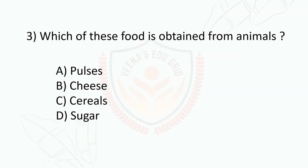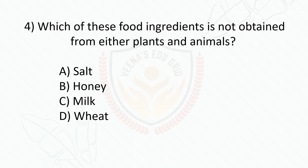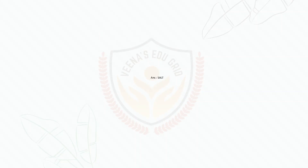Which of these foods is obtained from animals: pulses, cheese, cereals, or sugar? The answer is cheese. Which of these food ingredients is not obtained from either plants or animals: salt, honey, milk, or wheat? The answer is salt.